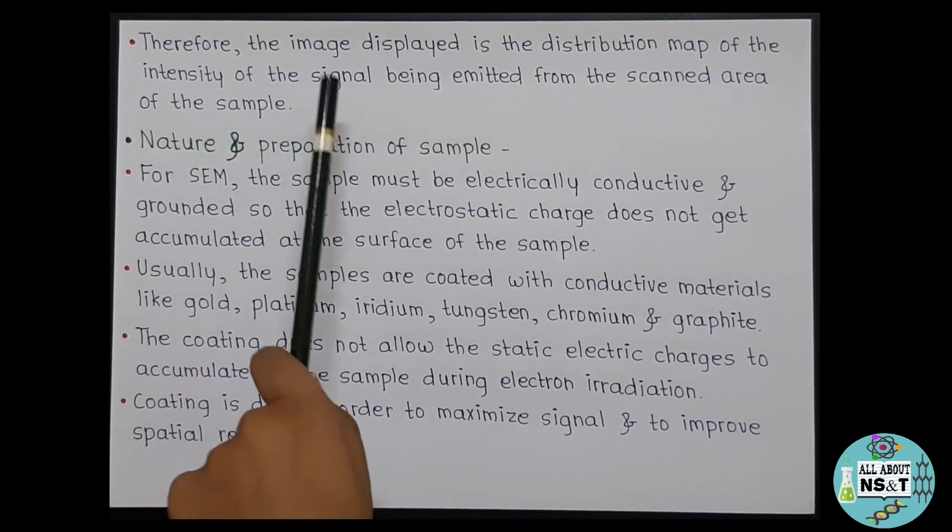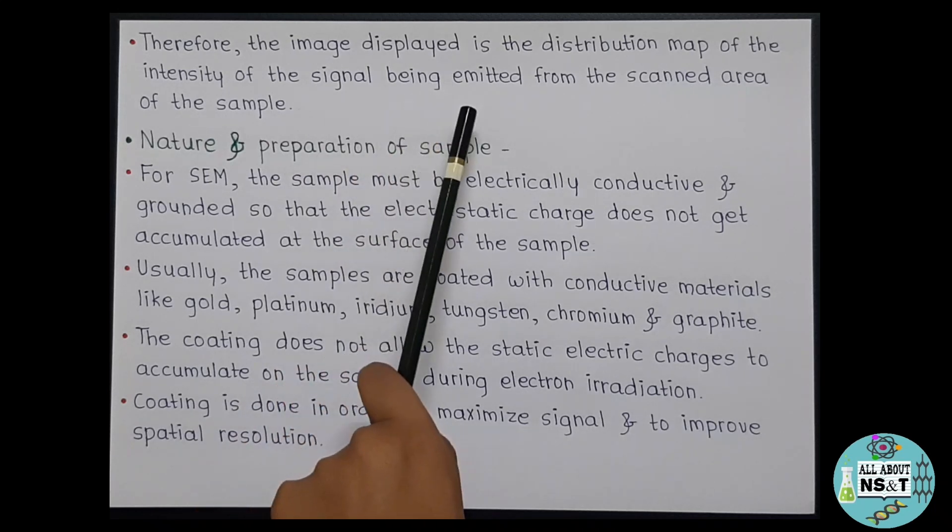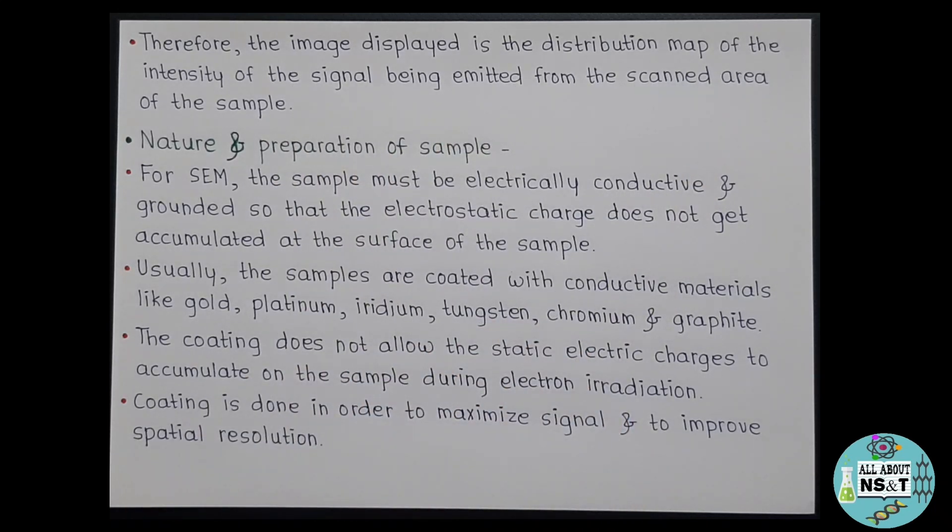Therefore, the image displayed is the distribution map of the intensity of the signal being emitted from the scanned area of the sample. So with this we are done with the instrumentation and working part of the SEM. Now let's talk about the nature and preparation of sample that is to be characterized using SEM.